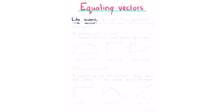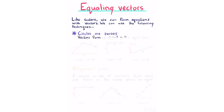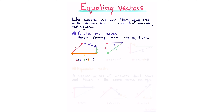Equating vectors. Like scalars, we can form equations with vectors. Closed paths equal zero: if we add vectors a, b, c, and d forming a closed path, the sum is zero. No matter which order you add them or how many vectors you use, a closed path of vectors always equals zero.